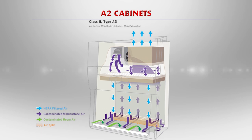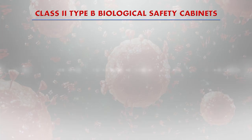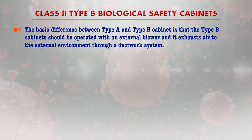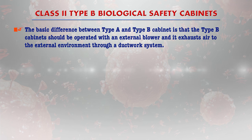In the type A2 cabinet, 70% of the air from the positive plenum is recirculated as downflow and the remaining 30% is discharged to the lab through the exhaust filter. The basic difference between type A and type B cabinets is that type B cabinets must be operated with an external blower and exhaust air to the external environment through a ductwork system. The ductwork system, air pressure, and filtration are all important factors distinguishing these cabinet types.